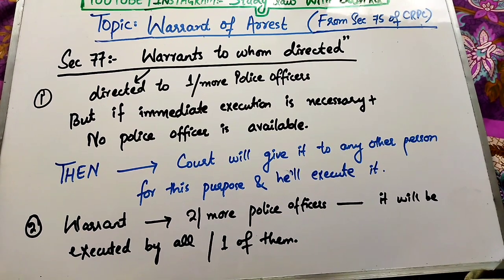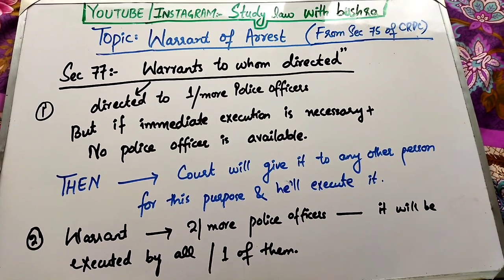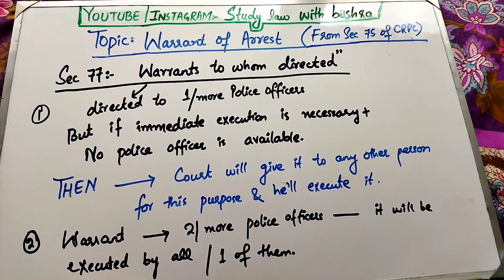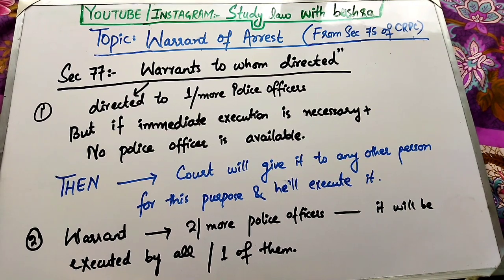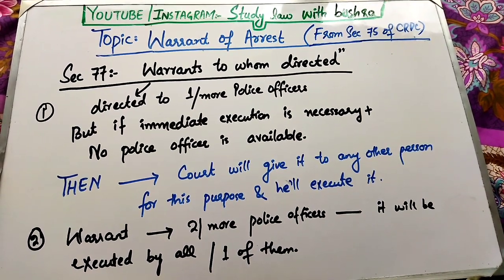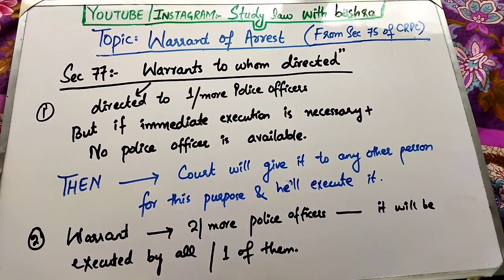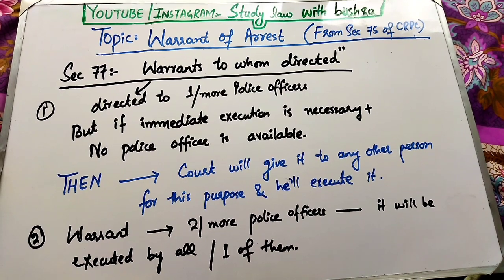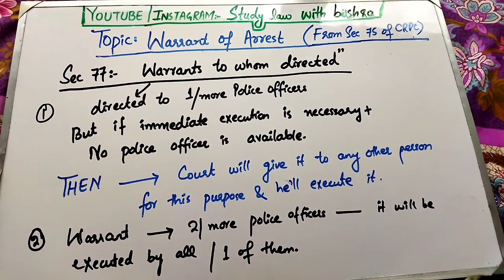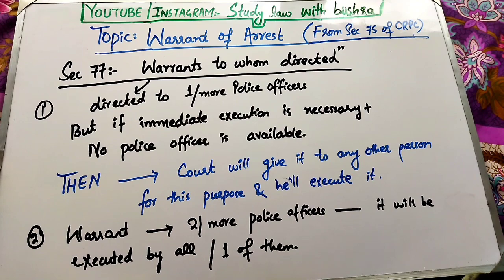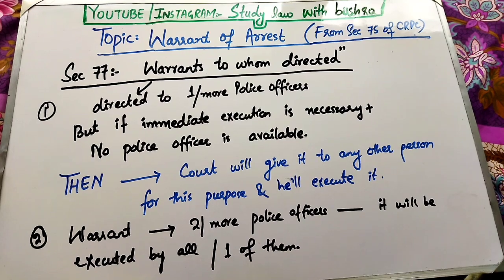Next آتا ہے section 77 جو deal کرتا ہے Warrants to whom directed. Section 77 کے according warrant ایک یا ایک سے زیادہ police officer کو issue کیا جائے گا. لیکن اگر کسی بندے کو فوری arrest کرنا ہے اور کوئی بھی police officer available نہیں ہے تو court کسی دوسرے بندے کو appoint کرے گی اس warrant کو execute کرنے کے لیے.